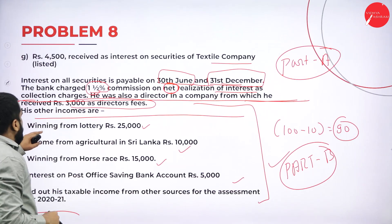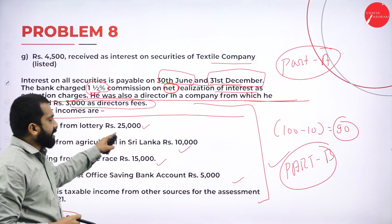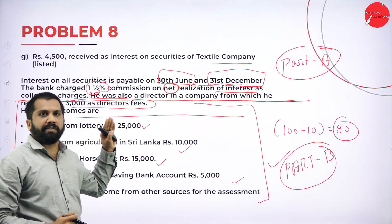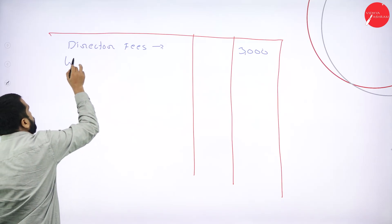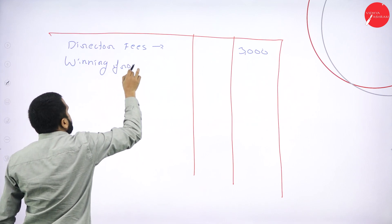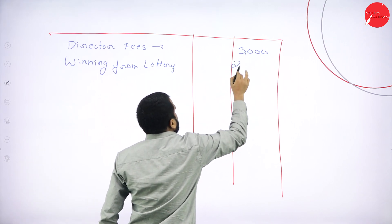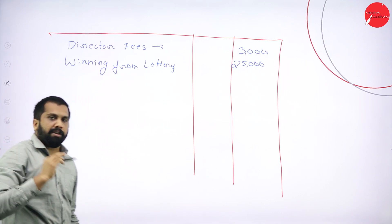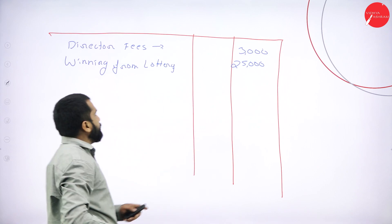Next: winning from lottery — rupees 25,000. Have they mentioned 'net' in this? They have not mentioned. Then we have to assume it is gross only. So winning from lottery = 25,000. If the net word were mentioned, then we would do × 100 ÷ 70 to gross it up.